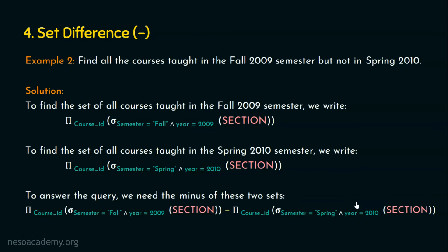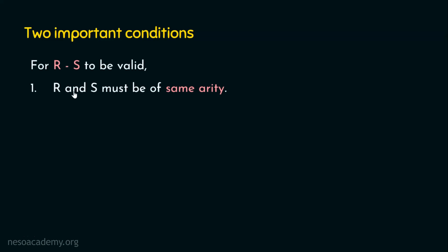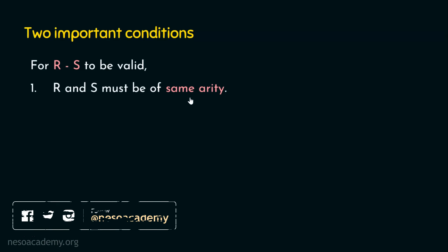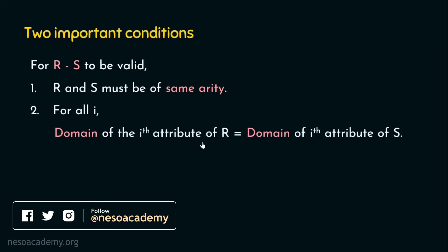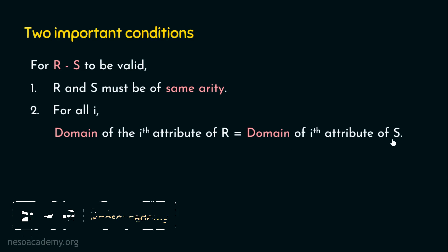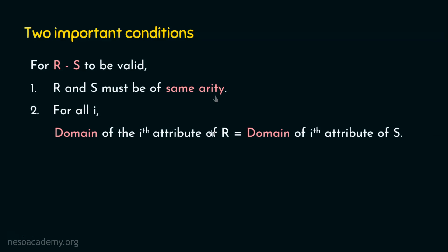Before we sign out, let's see the two important conditions that must be satisfied for any R minus S to be valid. The first condition is R and S must be of same arity — both relations must have the same number of attributes or columns. This is the same condition we saw for R union S. The second condition is: for all i, the domain of the ith attribute of relation R should be the same as the domain of the ith attribute of relation S. This is also the same condition we saw for R union S.